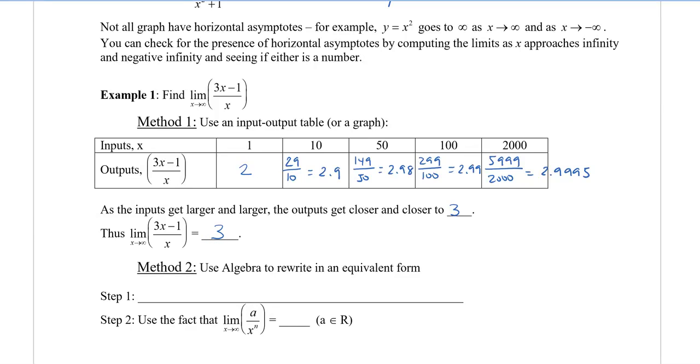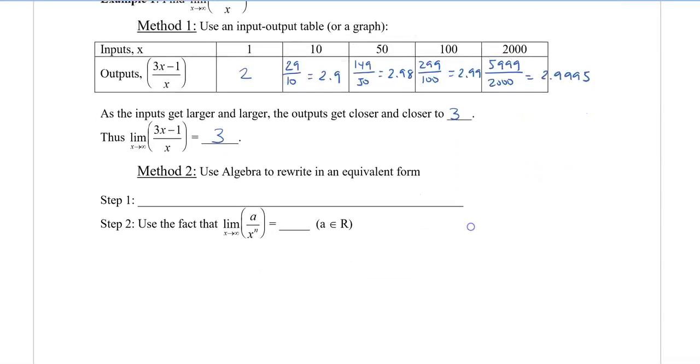We don't always want to just plug in numbers. Sometimes it's not very accurate, takes a long time, and it's hard to see. I'm going to show you how to do this algebraically. We're going to use algebra to write our function in the equivalent form. What we do is we divide each term by the variable with the highest exponent that is in the denominator.